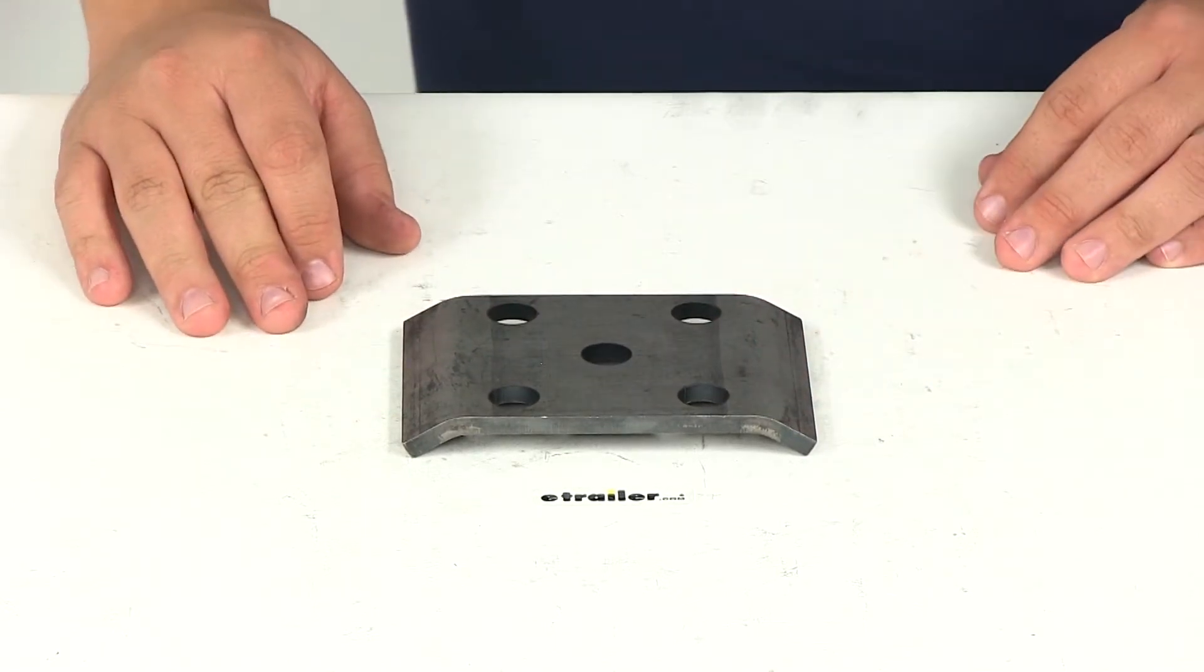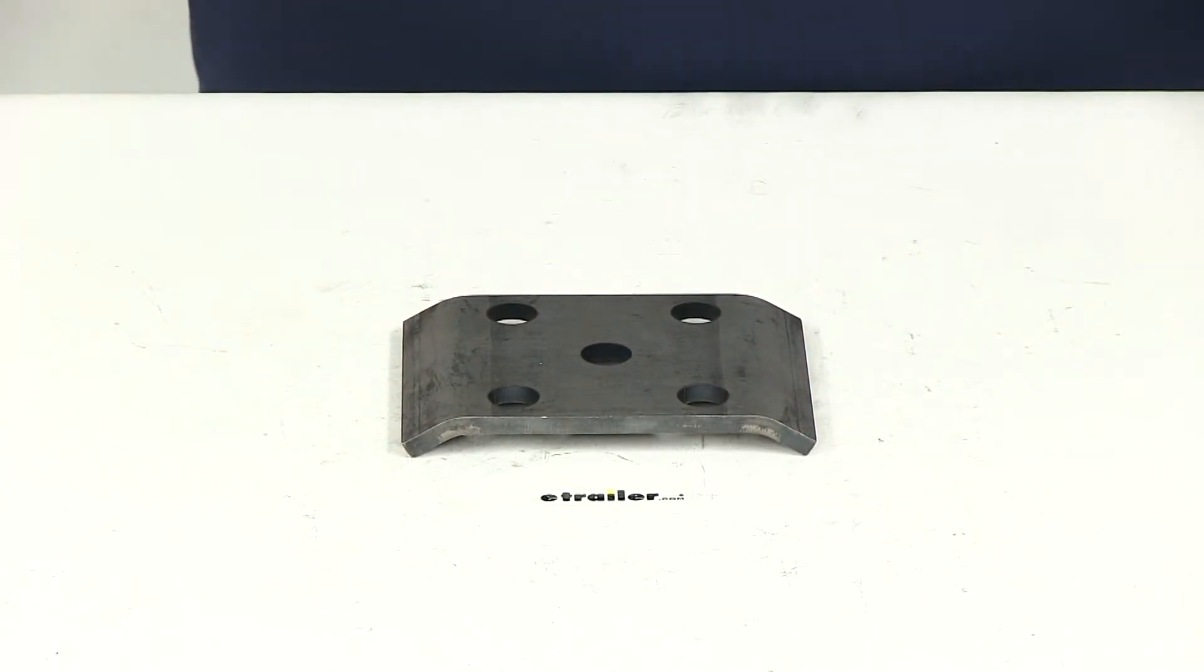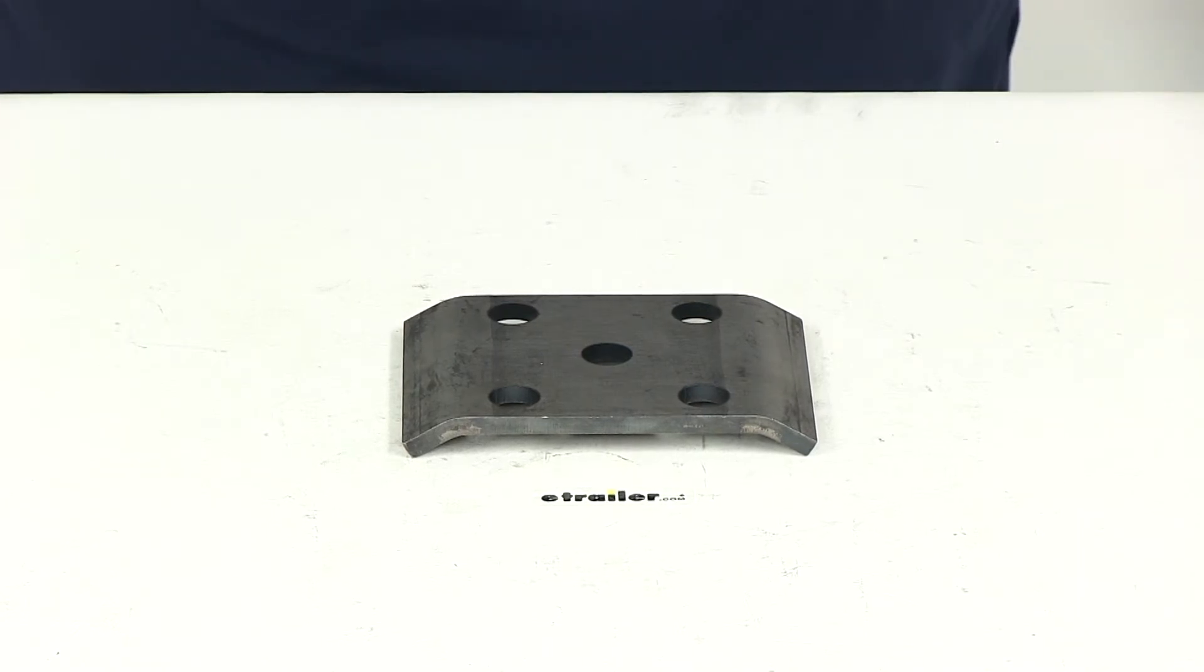That's going to do it for today's review of part number 116308. This is Redline's U-bolt plate for one and three quarter inch square trailer axles with one and three quarter inch wide springs.